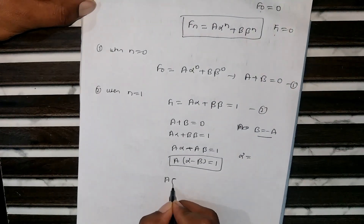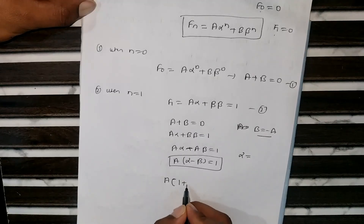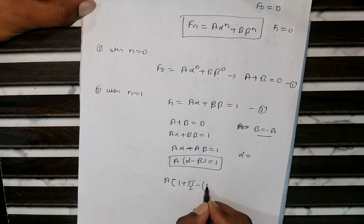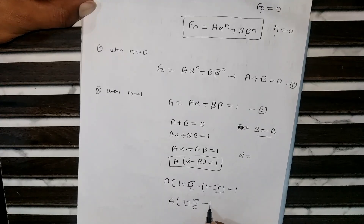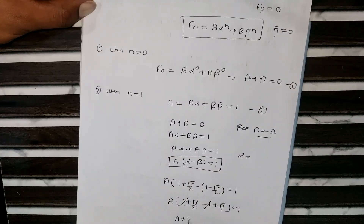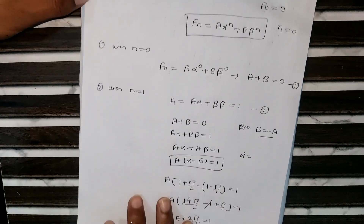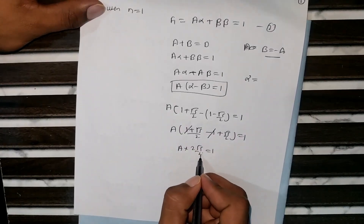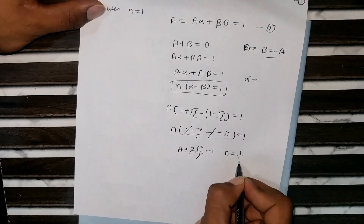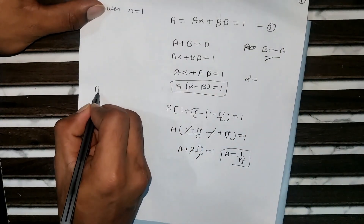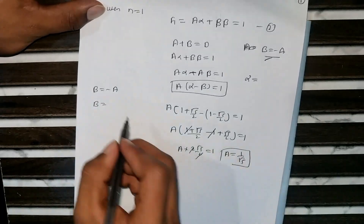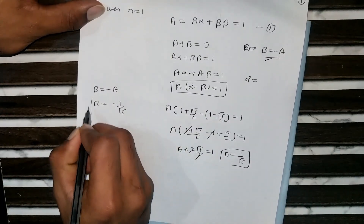Substituting: A · ((1 + √5)/2 − (1 − √5)/2) = 1. Simplifying inside the brackets: (1 + √5)/2 − (1 − √5)/2 = 2√5/2 = √5. So A·√5 = 1, giving A = 1/√5. Since B = −A, we get B = −1/√5.